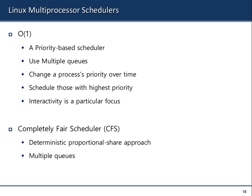In Linux, you have different schedulers. You have O(1) — those familiar with asymptotic notation know it's constant time. It's a priority-based scheduler that uses multiple queues, changes process priority over time, schedules those with the highest priority, and interactivity is a particular focus.